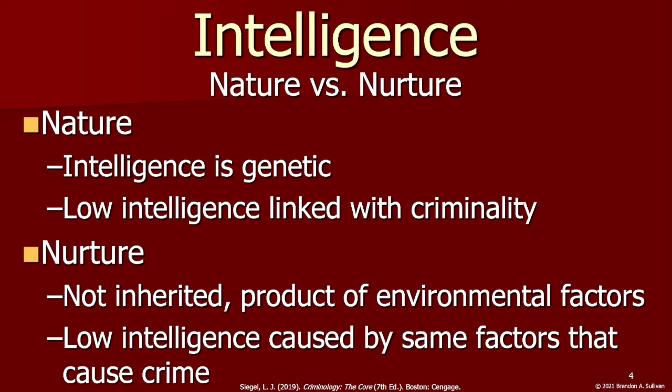Does intelligence predict crime? And more specifically, low intelligence. This idea of an intelligence-crime link has been around for a long time and is tied closely to the nature-nurture debate. As we discussed at length last week with biological theories, this originated largely due to beliefs of racial and ethnic inferiority, including prejudice against blacks specifically, and a strong anti-immigrant sentiment in the U.S. in the late 1800s and early 1900s.